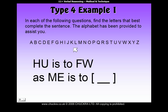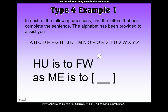It says HU is to FW as ME is to something, and you've got to find out what ME is to. We have to figure out the relationship between HU and FW — basically how they get from HU to FW. Once we've worked out the rule, you then apply the same rule to ME to find the answer.